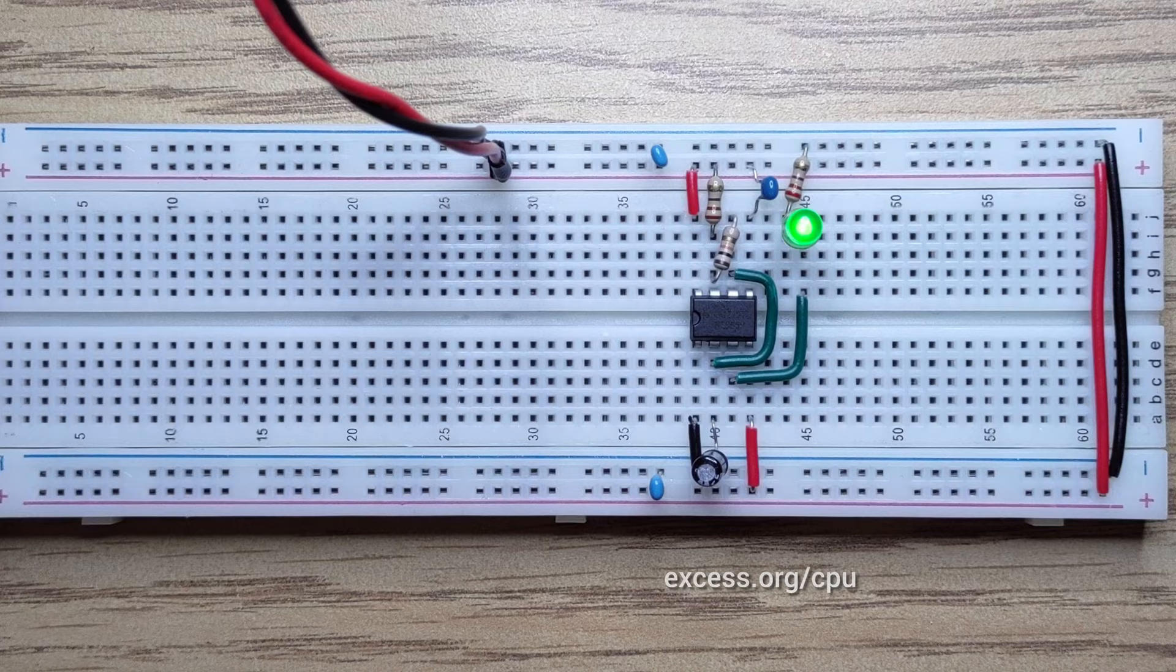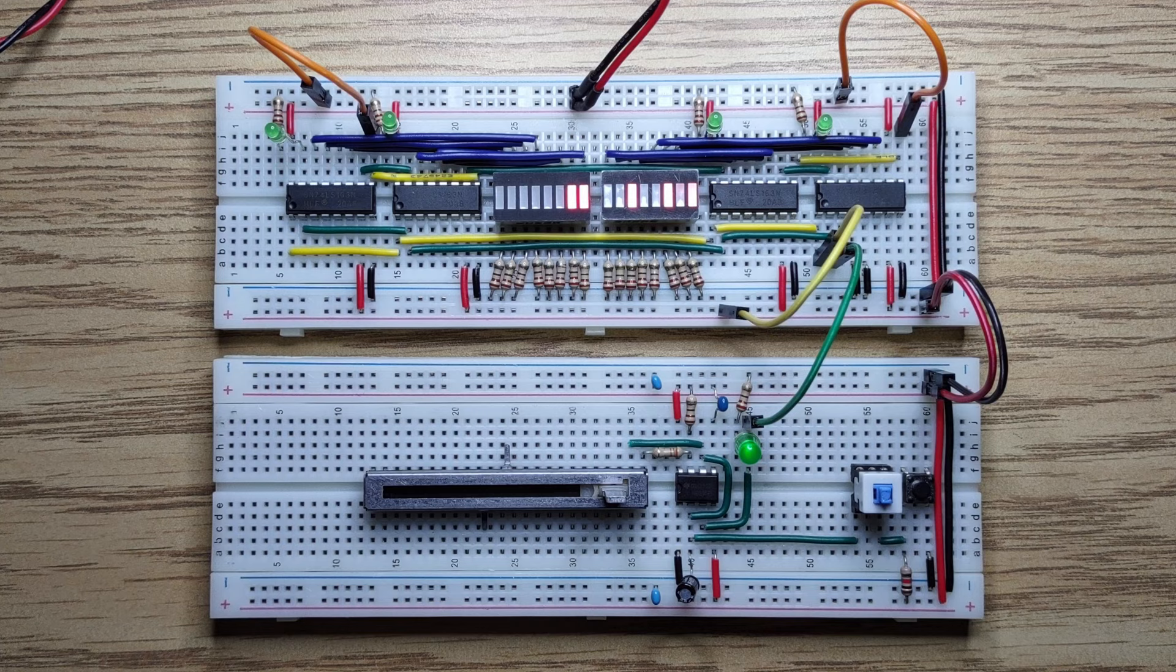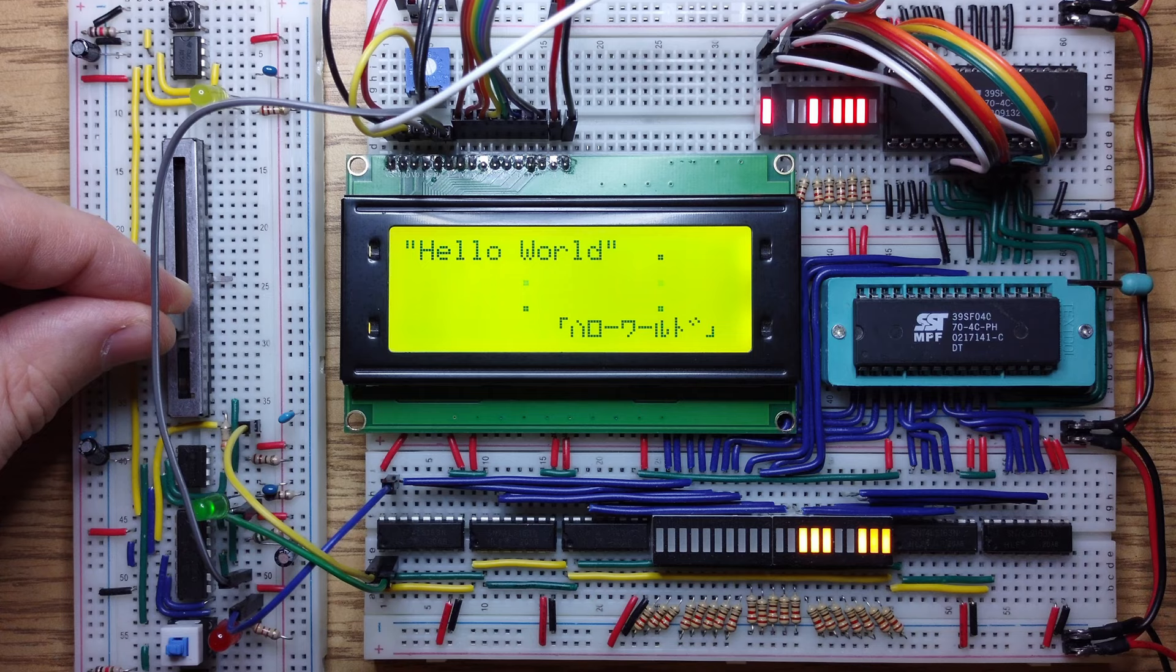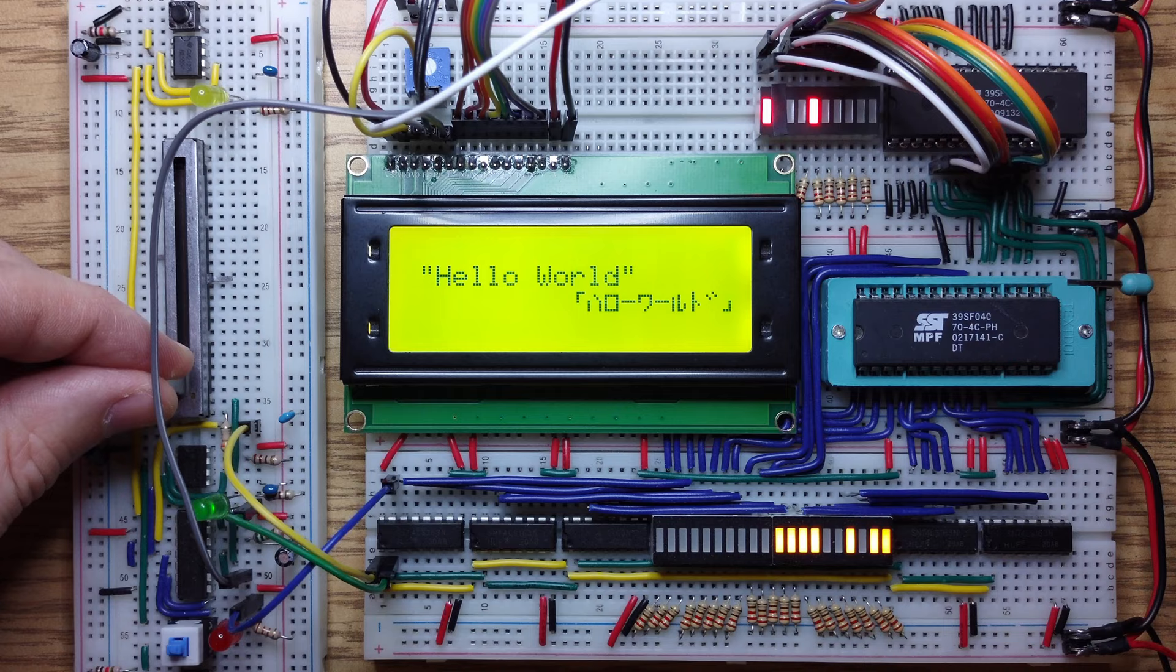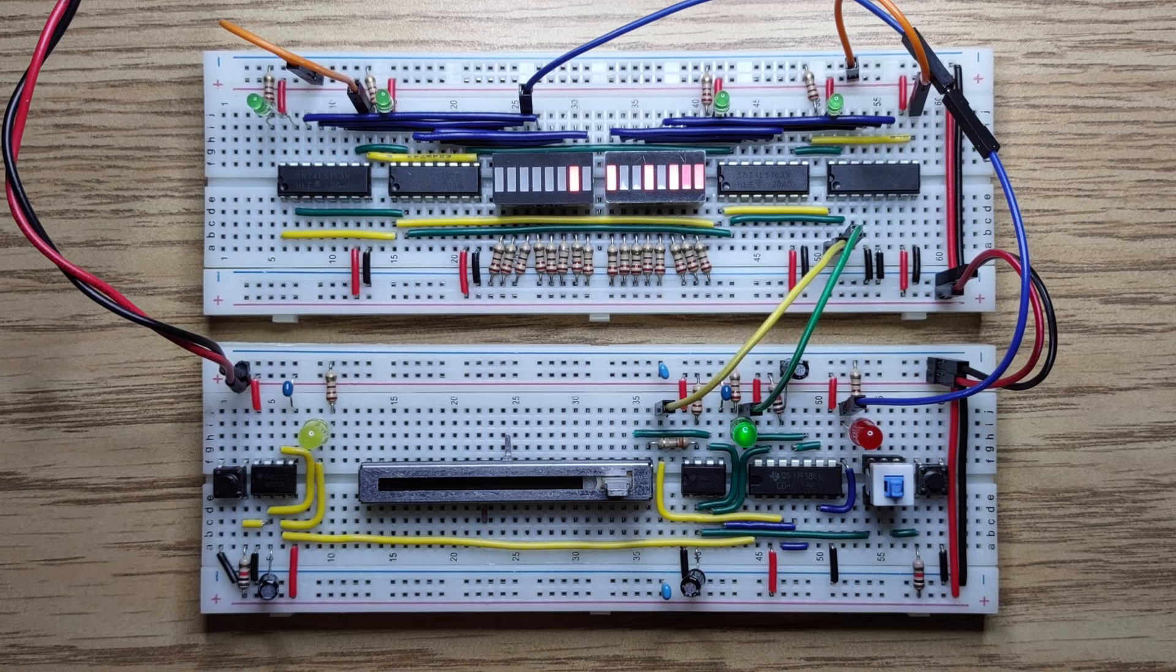In earlier videos we built a clock and address register connected to a program ROM, a lookup table, and a character LCD display. The circuit can play movies from the program ROM. We can control the speed of playback, single step, and reset with the clock, but there's no other way to interact with it.